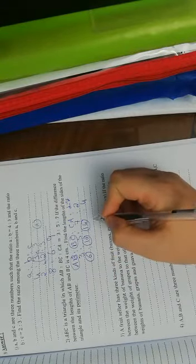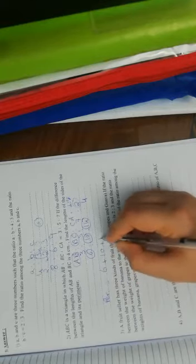Am I done? No. You want me now to get the perimeter. How to get the perimeter? You will just add 6 plus 10 plus 14, 30 cm.